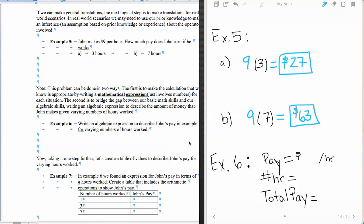So our next example, number six, is going to show us how we could write a mathematical expression to show what's going on in each of these examples so that no matter how many hours, variable hours, that John works, then we can find out how much money he's going to make. So I've written out the basics here in essence of time.